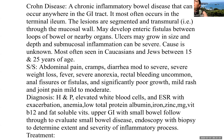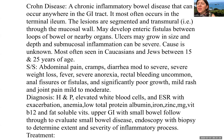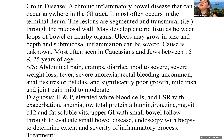Crohn's disease is a chronic inflammatory bowel disease that can occur anywhere in the gastrointestinal tract, most often in the terminal ileum. Lesions are segmented and transmural, meaning they can go through the mucosal wall. Fistulas may develop between loops of bowel or nearby organs. Ulcers can grow in size and depth. The cause is unknown. It is most often seen in Caucasians and people of Jewish descent between 15 and 25 years of age, and once diagnosed it is a lifelong condition.